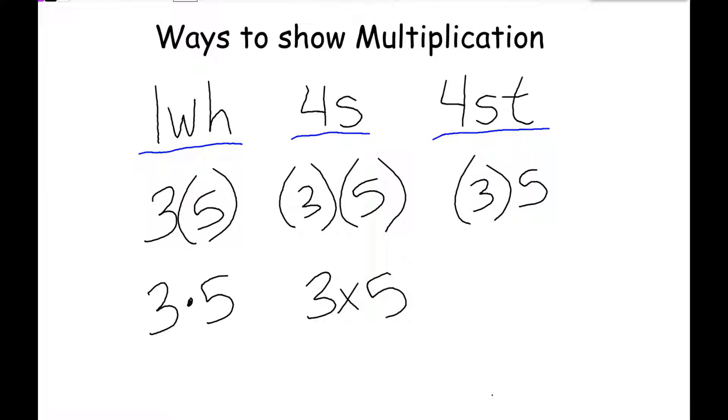We can also show multiplication with parentheses. If one number or both numbers have parentheses around them, that means you want to multiply these numbers. So all of these say three times five. You can also show multiplication with a little dot or of course with an X. As we get further along we start using the X as a letter. That's why we have all these other ways to show multiplication.